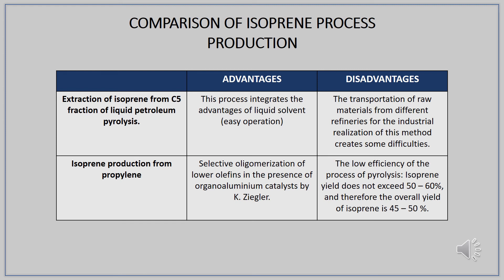Now we are moving on to the comparison of isoprene production processes. The first process, extraction of isoprene from the C5 fraction of liquid petroleum pyrolysis, integrates the advantage of liquid solvent — meaning easy operation — whereas transportation of raw materials from different refineries creates some difficulty for industrialization. The second process, isoprene production from propylene, involves dimerization on an aluminium silicate catalyst followed by thermal cracking of the dimer. Its advantage is the selective oligomerization of lower olefins in the presence of organo-aluminium catalyst by K. Ziegler. A disadvantage is the low efficiency of the pyrolysis process; isoprene yield does not exceed 50–60%, with an overall yield of 45–50%.